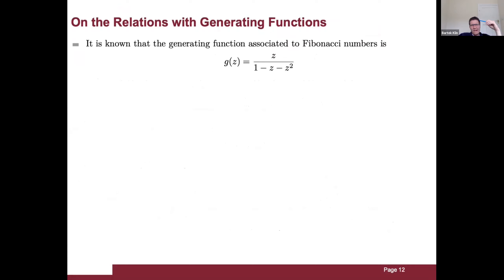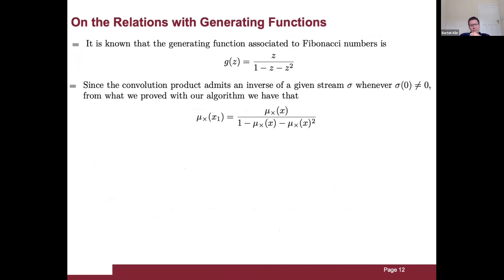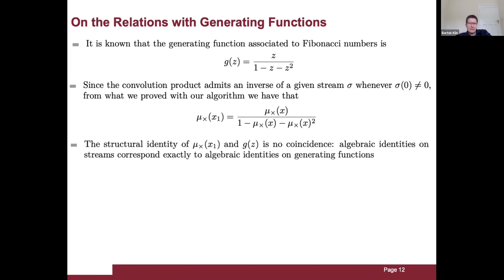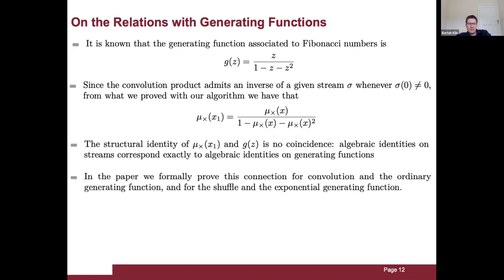It is known that the generating function associated to Fibonacci numbers is z over (1 minus z minus z squared). Since the convolution product admits an inverse whenever the output of the stream is not zero, mu_convolution of x1 equals mu_convolution of x over (1 minus mu_convolution(x) minus mu_convolution(x squared)). This structural identity is not coincidence: algebraic identities on streams exactly correspond to algebraic identities on generating functions. In the paper we formally prove this connection for convolution and the ordinary generating function, and also for shuffle and the exponential generating function.